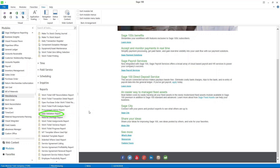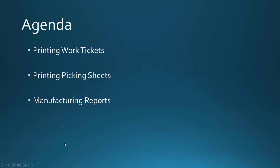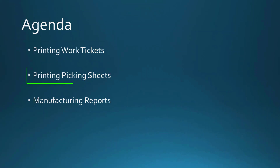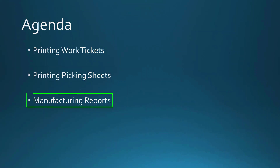To summarize: we took a look at printing work tickets, which are very much like a traveler. The work ticket printing program is a Crystal Report so it can be modified — for example, you could set it up so a page breaks between steps, giving a different sheet for each step. You can print picking sheets for work tickets for the material and send those out to pull material for the work tickets. And there's a whole myriad of reports in Sage 100c manufacturing that you can look at.